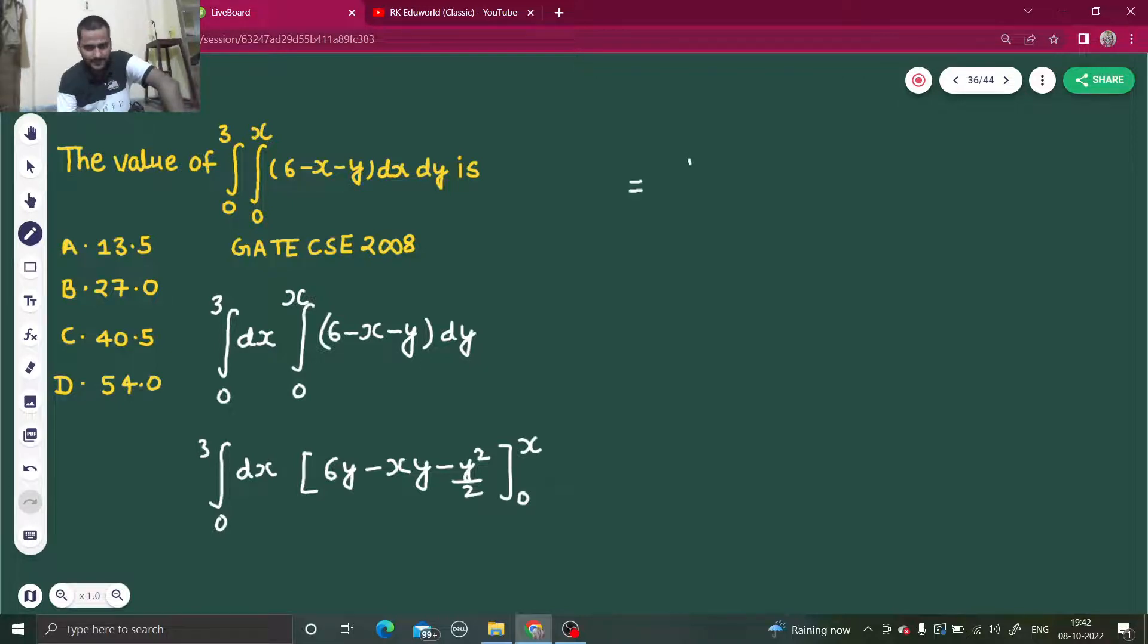So this becomes 0 to 3. After putting the limit, this becomes 6 into—in place of y you'll put, because you have integrated with respect to y—so 6x minus x squared minus x squared by 2. And when you'll put 0, each of the three terms will become 0. And then dx.